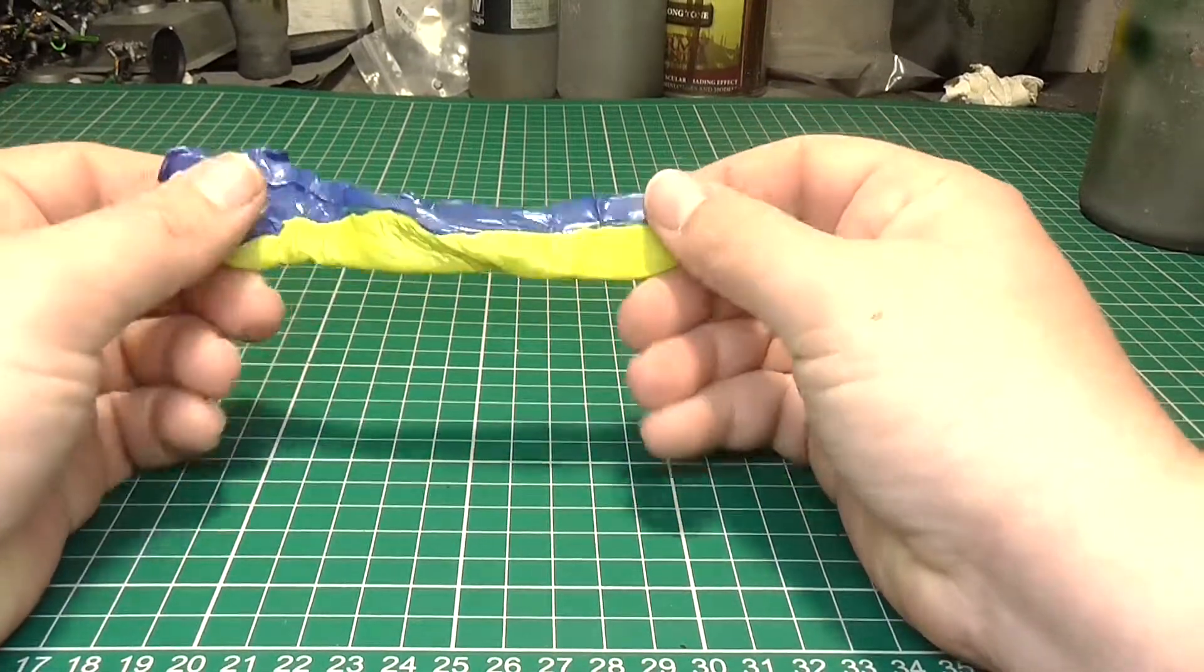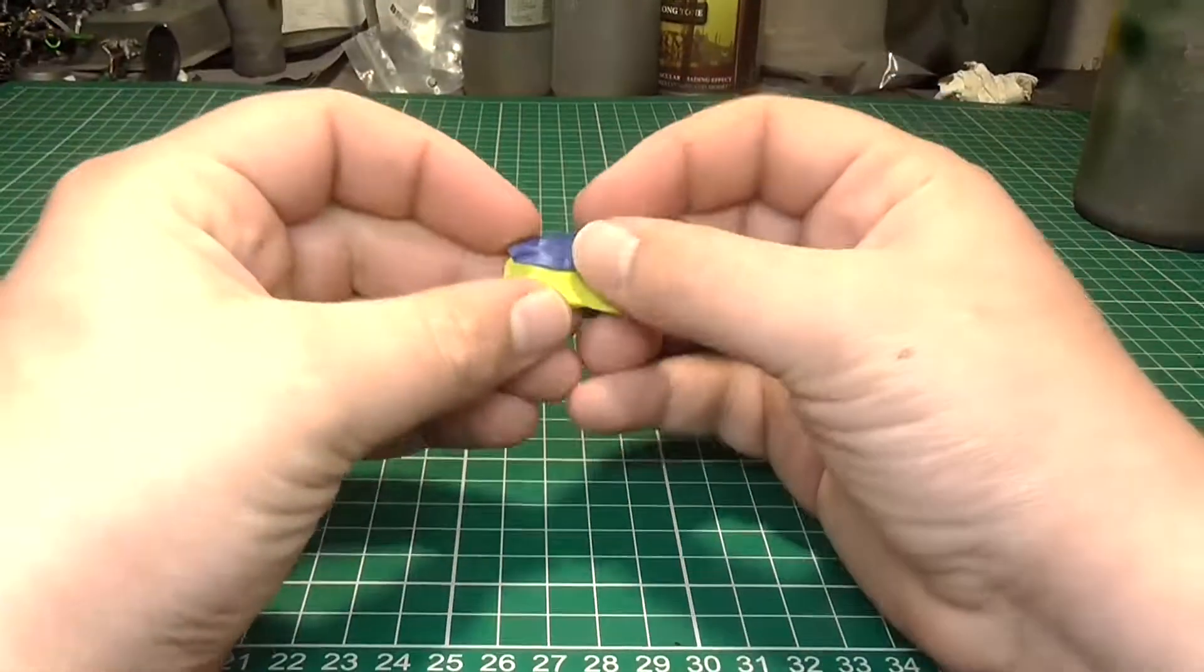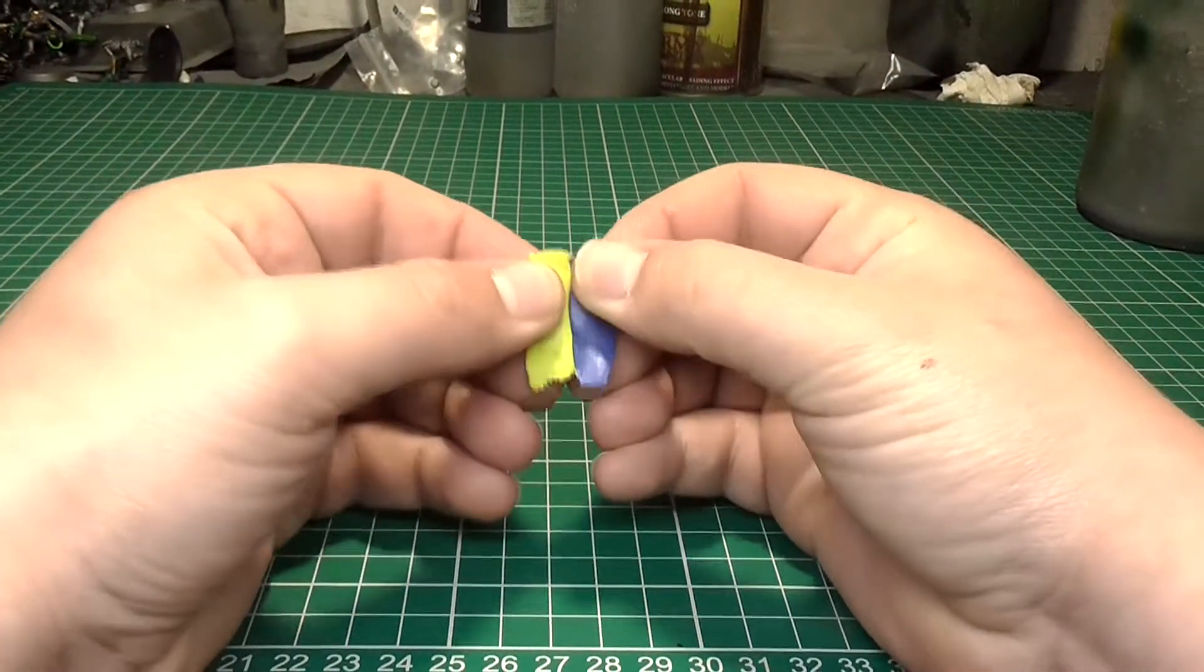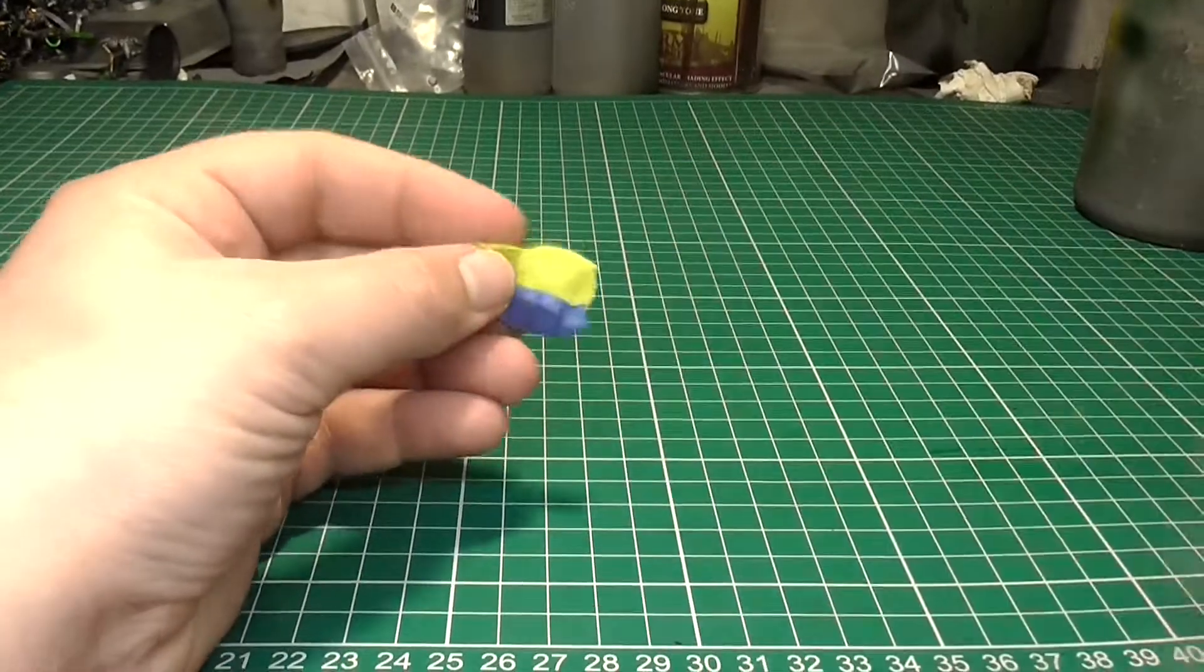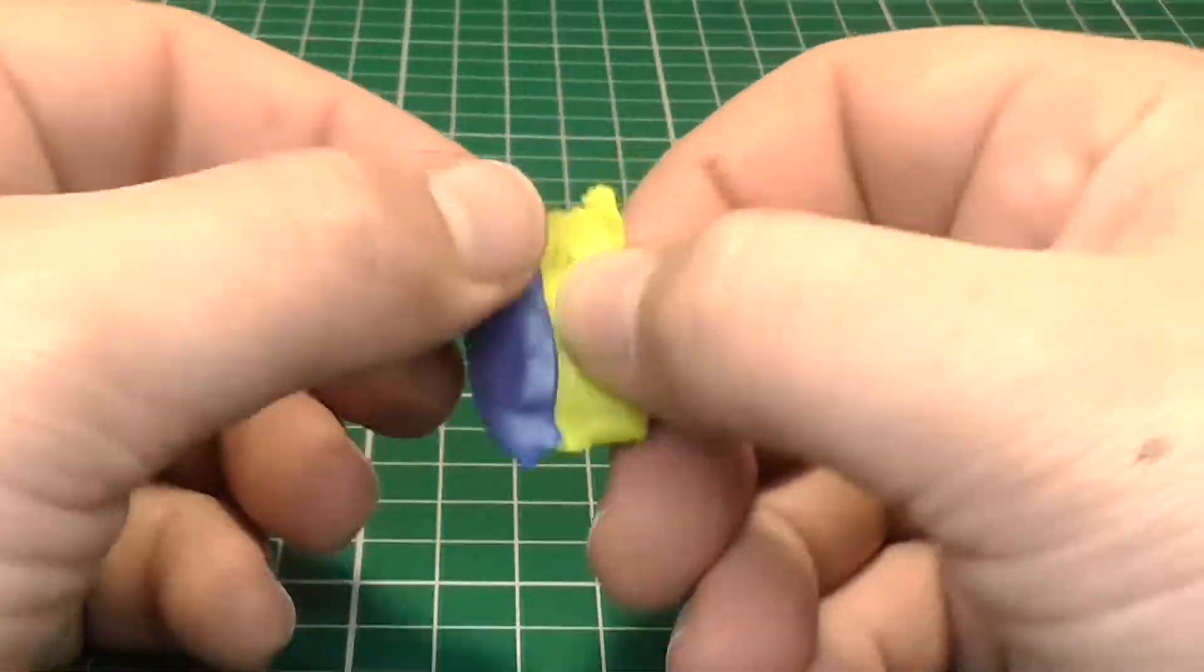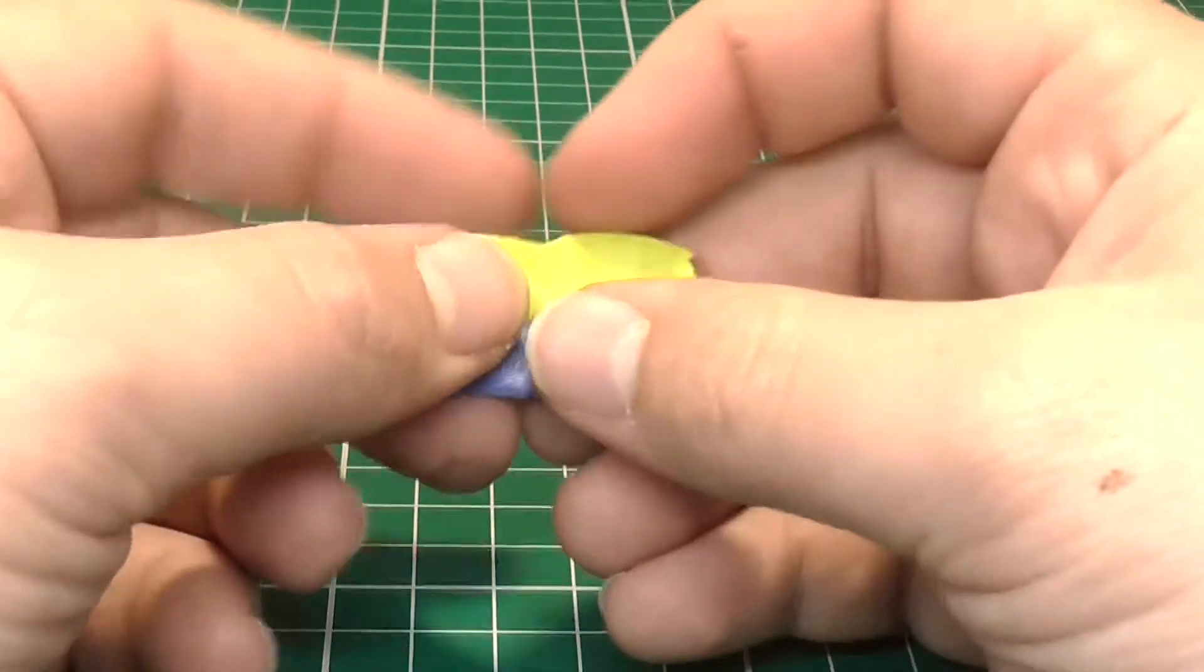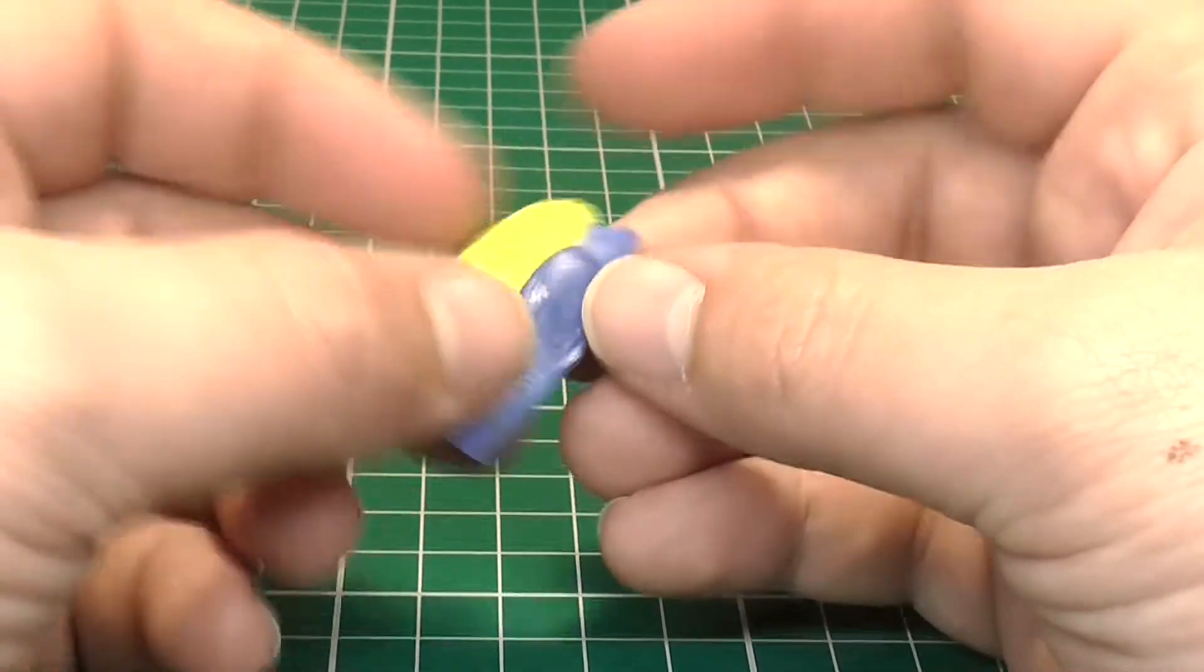But we're going to be talking about some of the basics of green stuff, and the first thing we're going to be talking about is kneading it properly. When you get green stuff, it often comes in these strips like this. You get the blue part and the yellow part. However, you can get it in its constituent components as well, in separate tubes. Most of the time, I just get it in the strips like this.